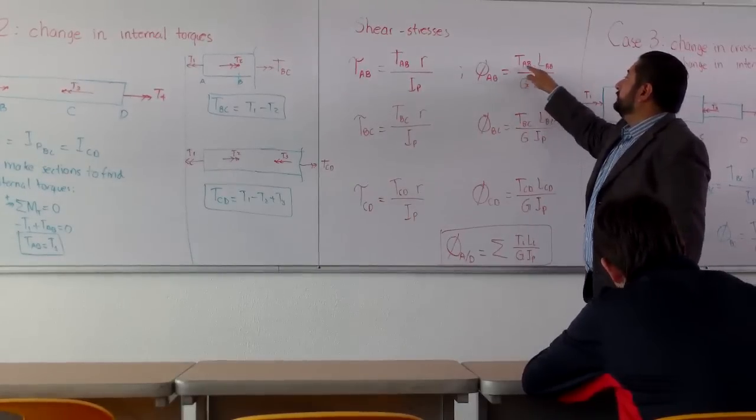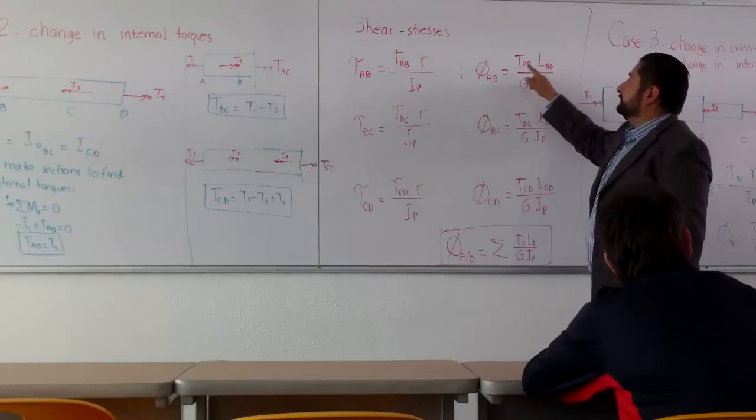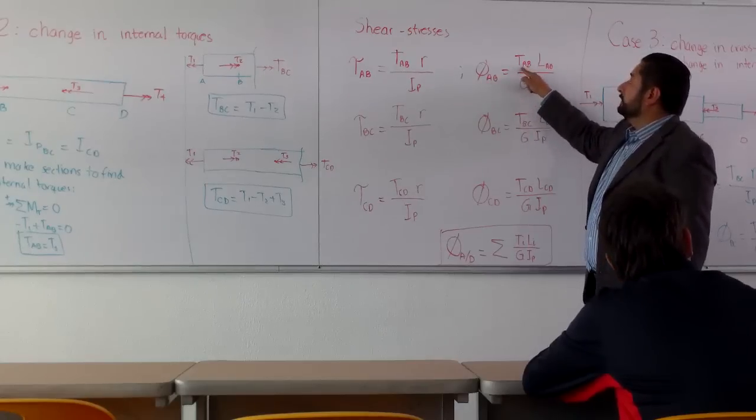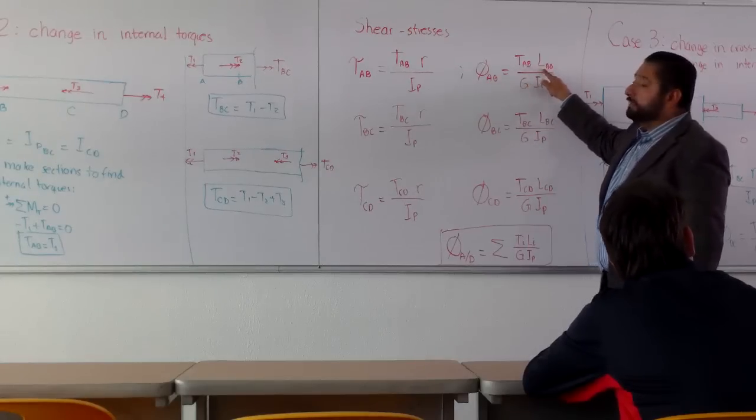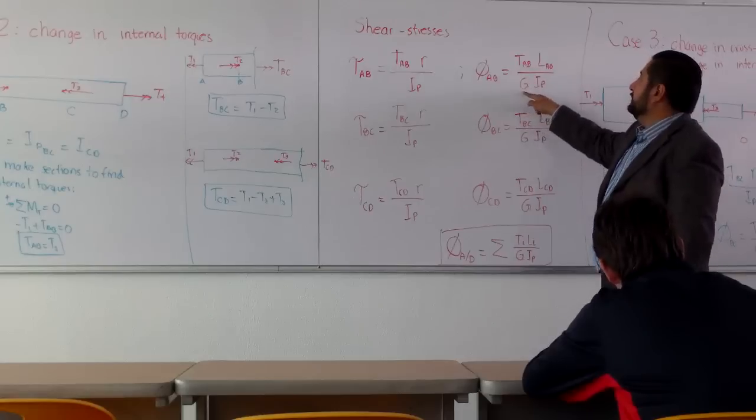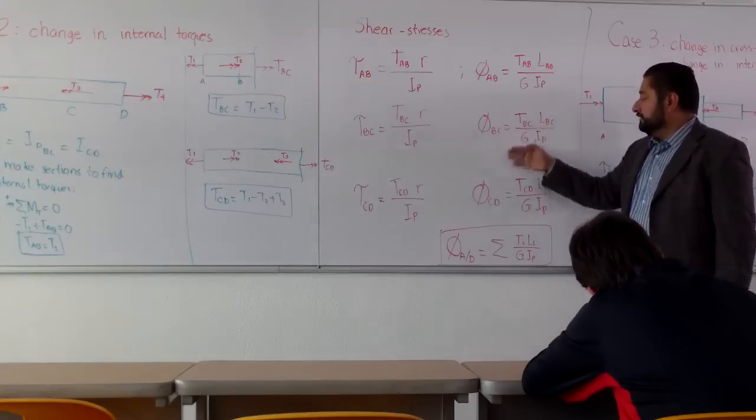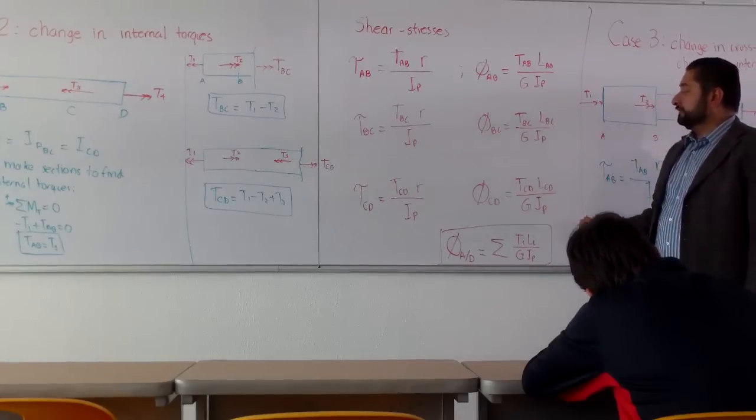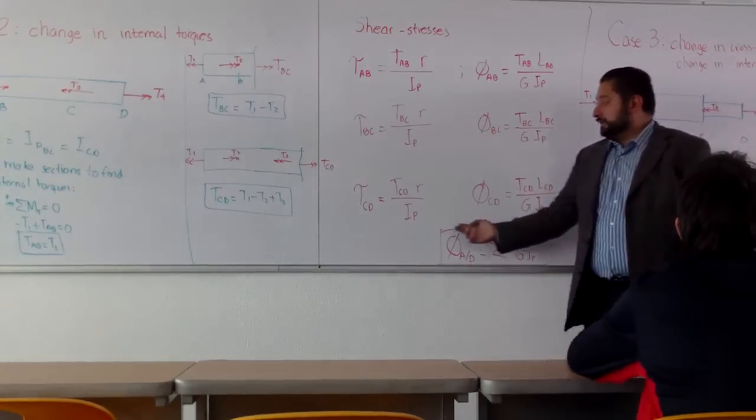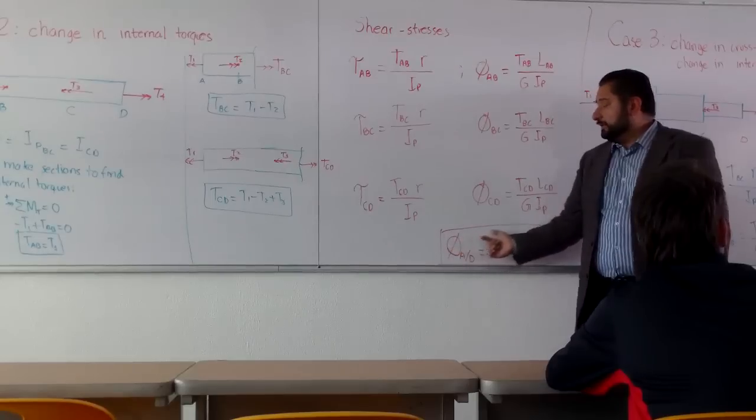For the angle, we also need to include the appropriate values for the segment AB, internal torque AB, length of the segment AB, G and IP remain constant in this case. And so on from the two other segments of the bar. What is the total angle between A and D, the two ends of the bar?